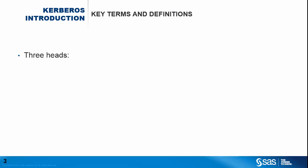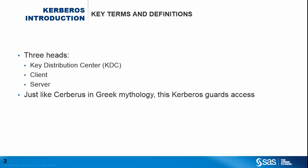Within Kerberos we have three different pieces as the participants — effectively three heads: the Kerberos Key Distribution Centre or KDC; the client, which is attempting to connect to something; and the server, hosting the thing the client is trying to connect to. Just like the Kerberos from Greek mythology, the Kerberos protocol guards access to our network resources.